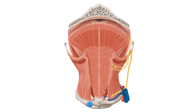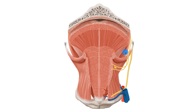The tongue consists of two groups of muscles: the intrinsic muscles and the extrinsic muscles. The intrinsic muscles consist of the superior longitudinal muscle, the vertical muscle, the transverse muscle, and the inferior longitudinal muscle. The extrinsic muscles consist of genioglossus, hyoglossus, styloglossus, and palatoglossus.